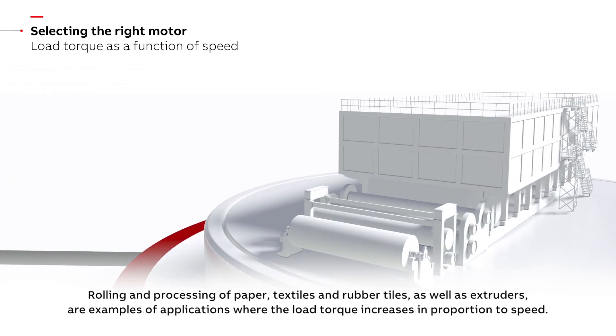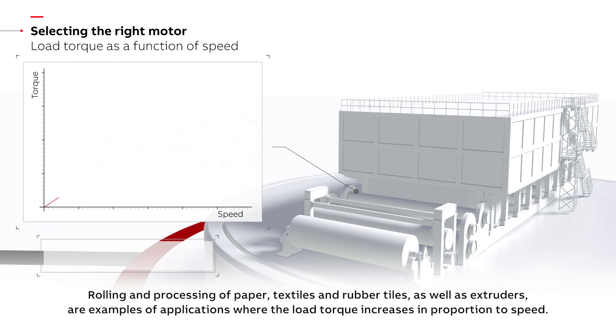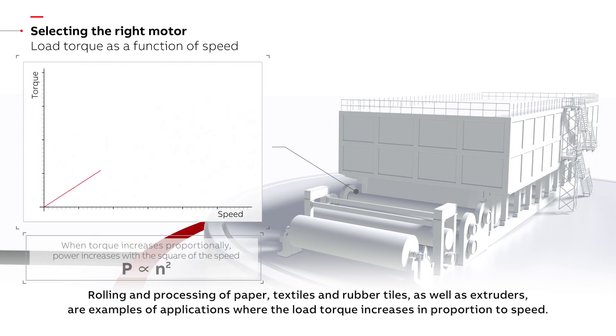Rolling and processing of paper, textiles and rubber tiles, as well as extruders, are examples of applications where the load torque increases in proportion to speed.